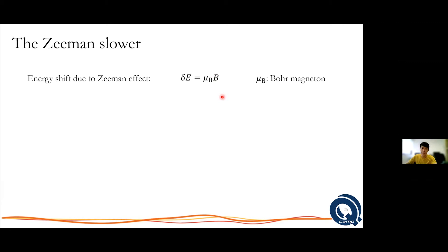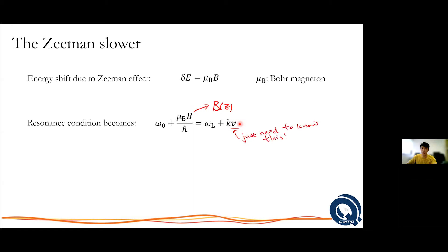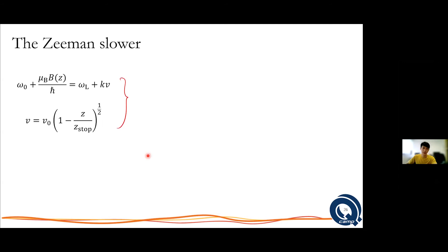In a nutshell, these energy levels shift proportionately to the strength of the magnetic field you apply, which changes your resonance conditions. Originally without the B field term, the resonance is fixed; but with a spatially dependent magnetic field, you might be able to always maintain resonance conditions. You just have to figure out how B changes in space. Using the kinematics equations from earlier, we express the velocity of the atom as a function of displacement and solve to obtain the magnetic field profile that satisfies the resonance condition at all times.